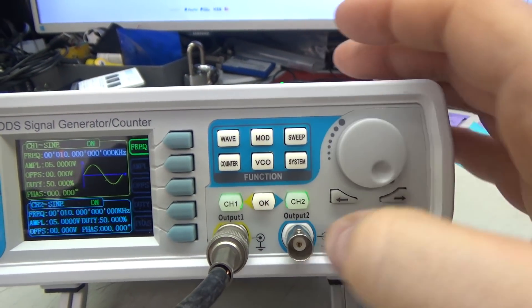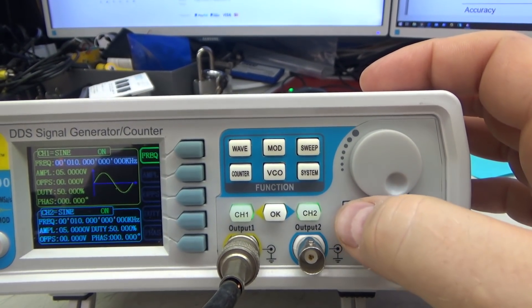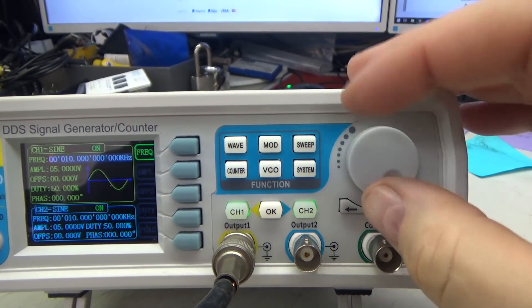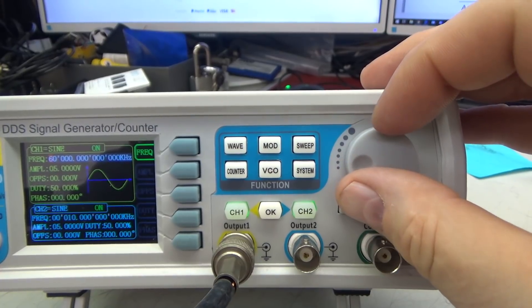You have frequency control and these buttons over here let you select what digit you are adjusting so if I went up to here I could adjust right up to 60 megahertz.